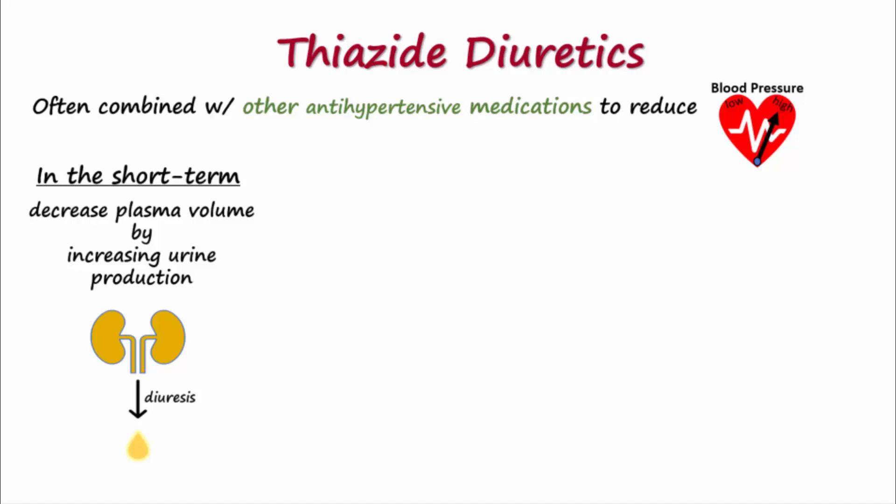This explains why thiazides are even more effective at lowering blood pressure when combined with an ACE inhibitor or angiotensin receptor-blocking drug. These medications decrease the production or effect of angiotensin II that rises with increased renin.